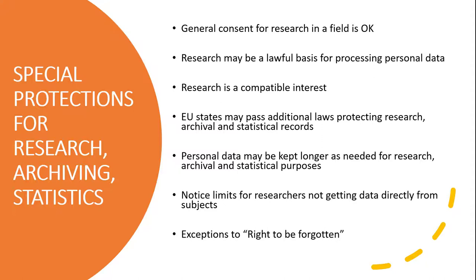Here, too, we see some preferential treatment for research and archiving. Notably, when a data controller — say a researcher in the EU — gets personal data but not from the data subjects directly, Article 14 says that they do not need to provide the usual notice if providing it would prove impossible or involve a disproportionate effort in connection with archiving data in the public interest or performing research or statistical analyses. Now, impossible really does mean impossible — there has to be true impossibility. It's not really clear what disproportionate effort means in practice because impossibility seems to be carrying the day.